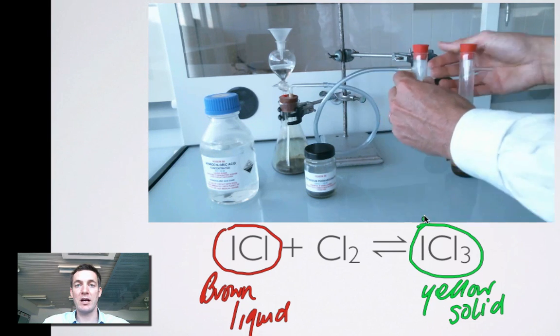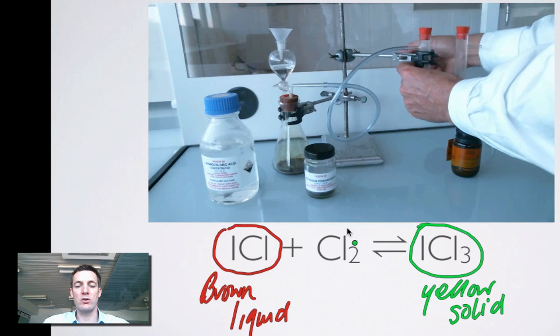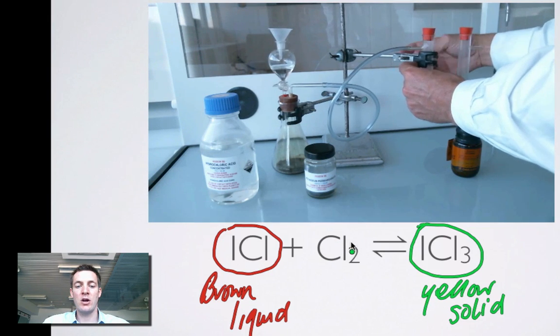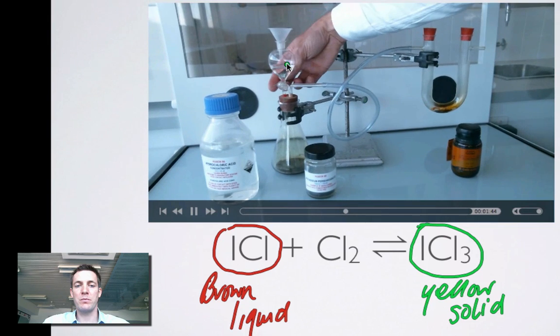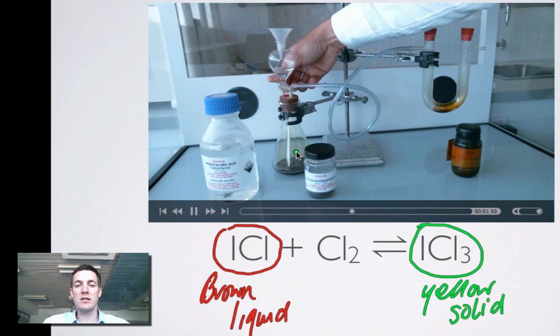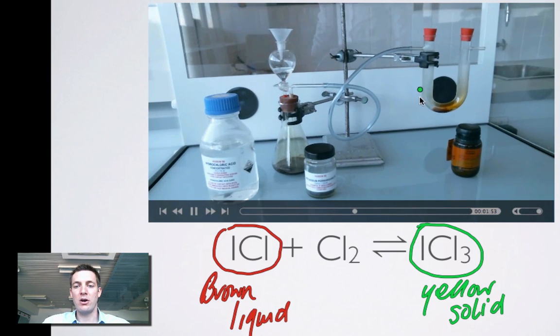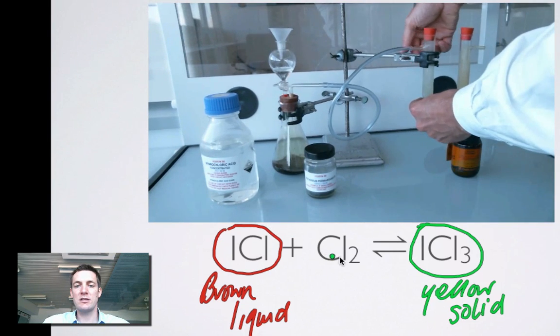Just going to connect the thing back up again now so that we can actually see what happens when we add more chlorine to the system. So we've just seen us removing it. We're now going to add chlorine to the system. So I'm going to pour some more hydrochloric acid down onto the potassium manganate. Chlorine will start to form in this flask here. And it will pass through this tube and over the brown liquid which is our iodine monochloride.